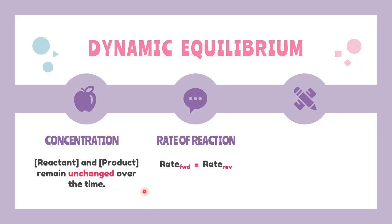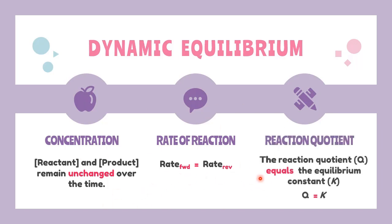Both forward and reverse reactions are happening at the same time. As for the final factor, which is the reaction quotient, conditions such as partial pressure of gases form a constant. Both Q and K are constants, but Q is a constant at non-equilibrium conditions, while K is a constant at equilibrium conditions. You determine which one is Q and K based on the information given in the questions.